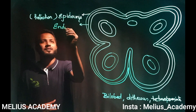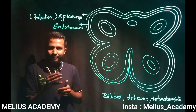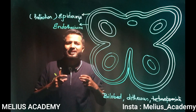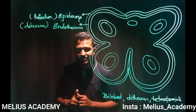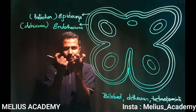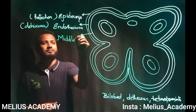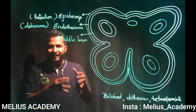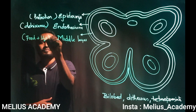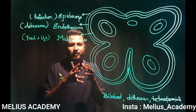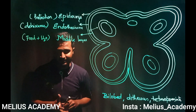The layer beneath epidermis is called endothecium. It has specialized cells which help in dehiscence of the anther — meaning breaking open — because they have hygroscopic properties. Followed by that, we have the middle layer, which is about three to five layers of parenchyma cells present from endothecium till tapetum. This entire region constitutes the middle layer cells, which help in storage of food and water.